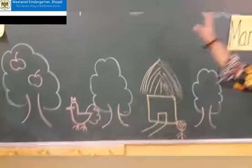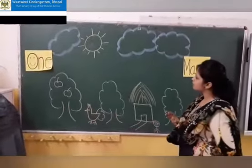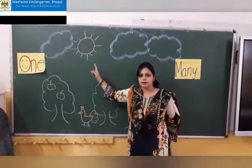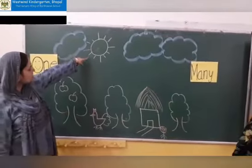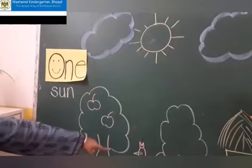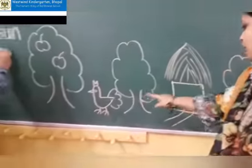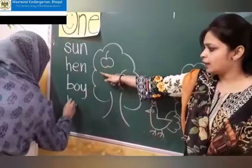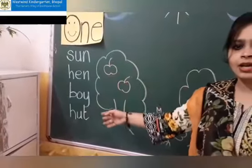I hope you all have observed this picture carefully. Now I'm going to ask questions. Tell me, what are the things in this picture that are one in number? I can see one sun — yes, there is one sun in the picture. No ma'am, also hen, boy, and hut. Wonderful — so we have more things that are one in number: sun, hen, boy, hut. All these words we have done in English CVC words.